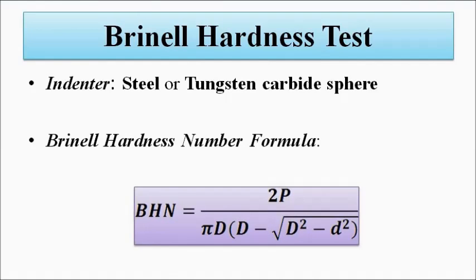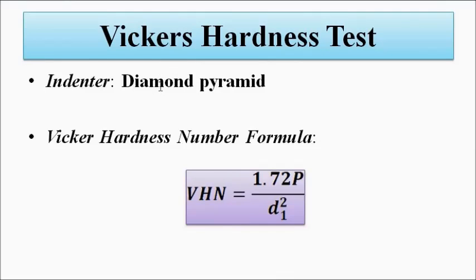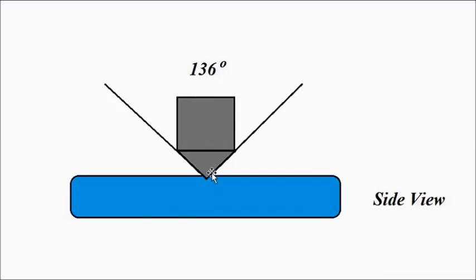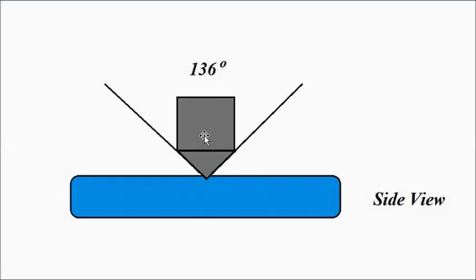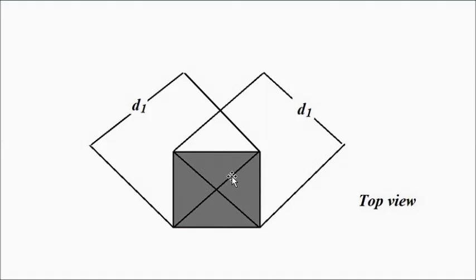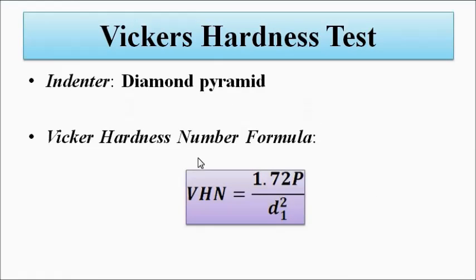Next is the Vickers hardness test. Here the indenter material is a diamond pyramid-shaped structure. It is forced upon the specimen surface forming an indentation. From the top view, the indentation looks roughly square or rectangular in shape, and the diagonal of the indentation is given by d1 — the length of the diagonal of the indentation. The Vickers hardness number is calculated as: VHN = 1.72 × P / d1², where d1 is the length of the diagonal.